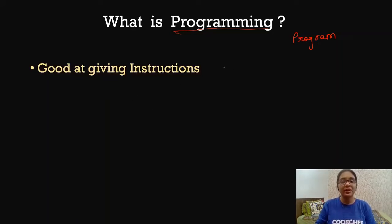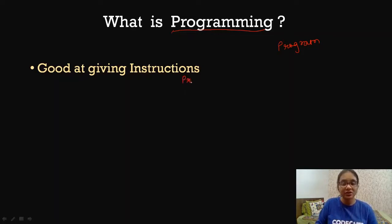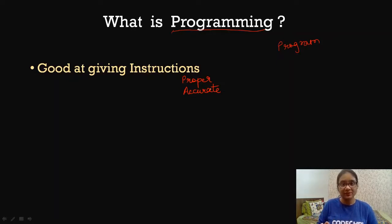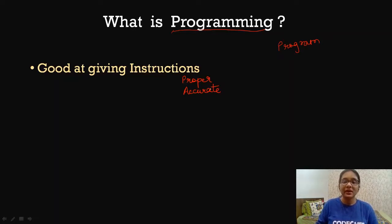That is the gist of programming. Being good at giving instructions means giving proper, accurate, and clear instructions. There cannot be any kind of ambiguity when you are giving instructions. For example, if you send a child to bring butter, even if you do not tell the child the brand, the child will still be able to take that decision on their own, because they know what butter comes home always.